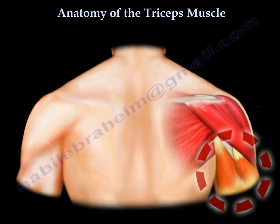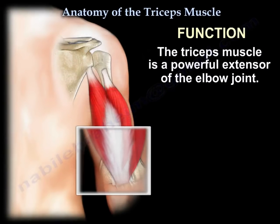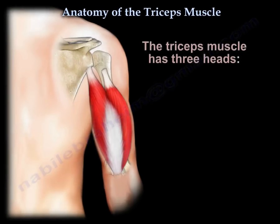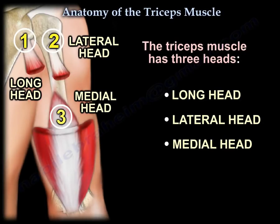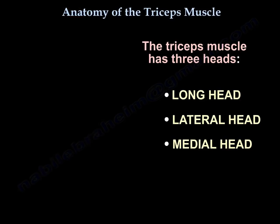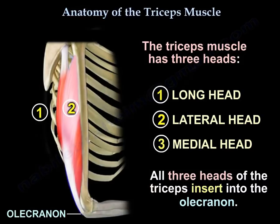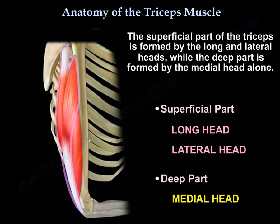Anatomy of the triceps. The triceps muscle is a powerful extensor of the elbow joint. The triceps muscle has three heads: long head, lateral head, and medial head. This diagram clearly shows the three heads. All three heads of the triceps insert into the olecranon. The superficial part of the muscle is formed by the long and the lateral heads. The deep part is formed by the medial head alone.